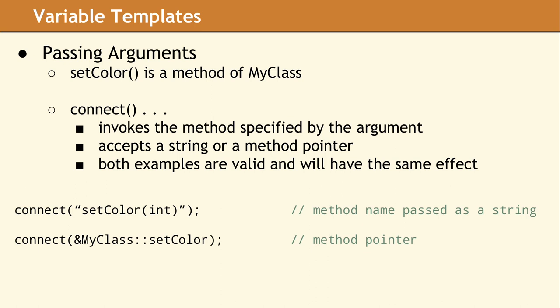Establishing a signal-slot relationship means that when some event occurs, then a method is called in response. The event is the signal and the response is the slot. In Copperspice, you set this up by calling a method named connect and passing several parameters.